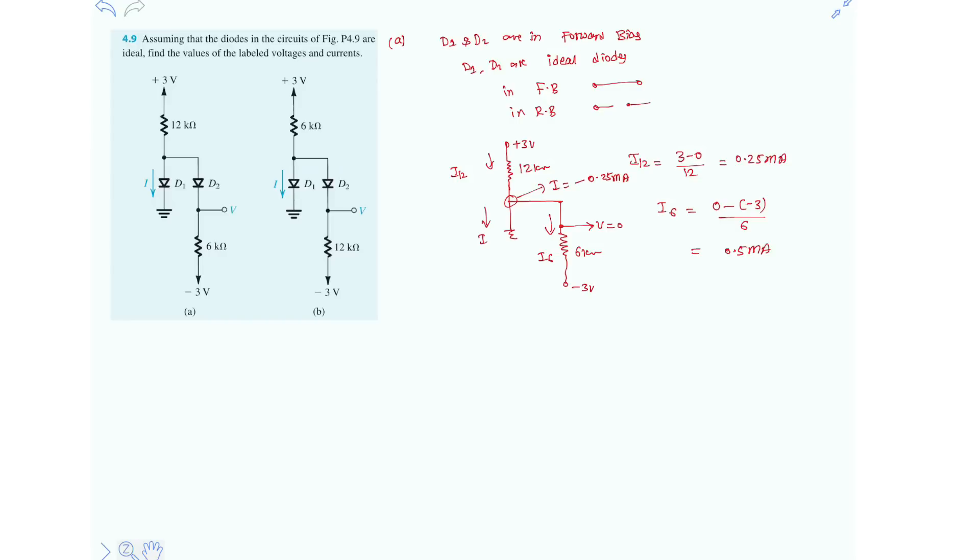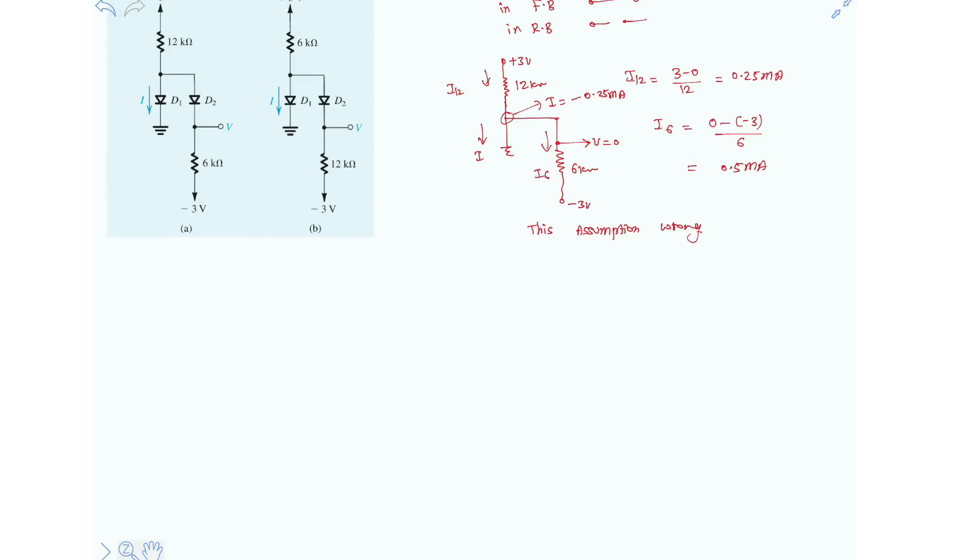So current cannot flow from cathode to anode. So this assumption is wrong. This assumption is wrong. D1 must be reverse biased now. So now, our second assumption: let's take D1 is in reverse bias and D2 is in forward bias.